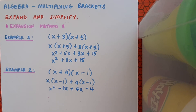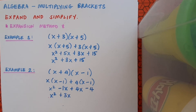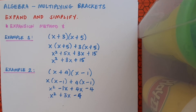Now I need to simplify by putting like terms together. The x squared is there by itself — there's no other x squared in the expression. The minus 1x and the plus 4x go together: minus 1 plus 4 gives plus 3, so I write plus 3x. Don't hesitate to use your calculator if you need to. Finally, minus 4 is by itself with no like term, so I write minus 4 at the end. Example 2 is finished.